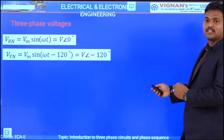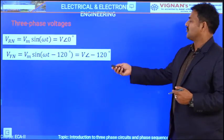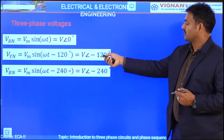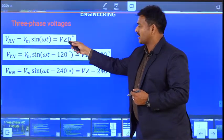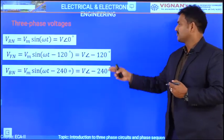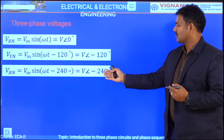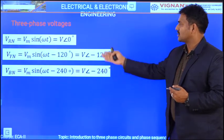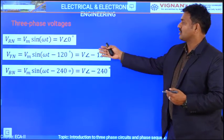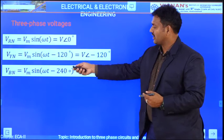With this setup, a three-phase AC synchronous generator produces three voltages: V_RN, V_YN, and V_BN. Mathematically, V_R is written as V_m sin(ωt), or in phasor form as V∠0°. V_Y has the same magnitude but lags by 120°, and V_B lags the reference V_R by 240°. The phase sequence is assumed as R-Y-B, meaning R voltage is generated first, followed by Y and then B.